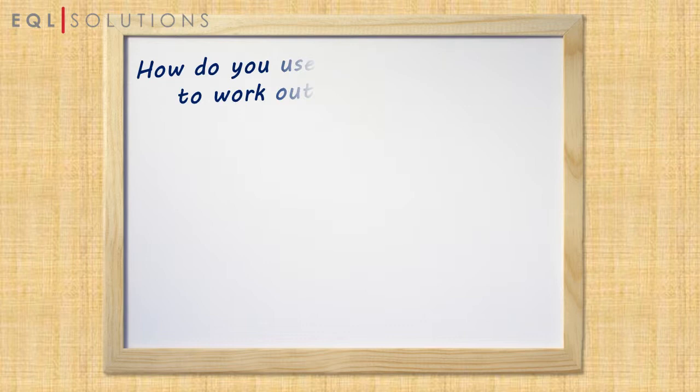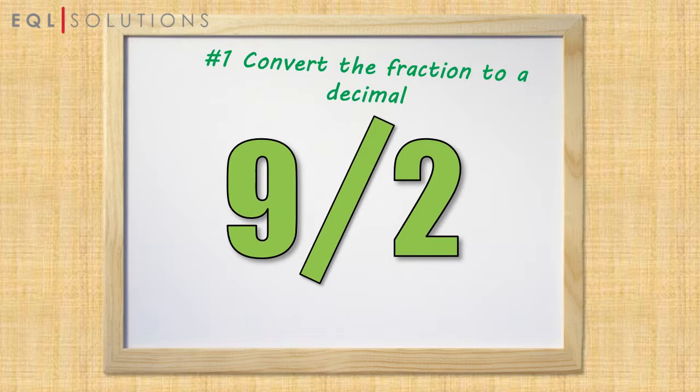So how do you use betting odds to work out the winnings? The easiest way to work this out is like this. First up, convert the fraction to a decimal by dividing the first number by the second.